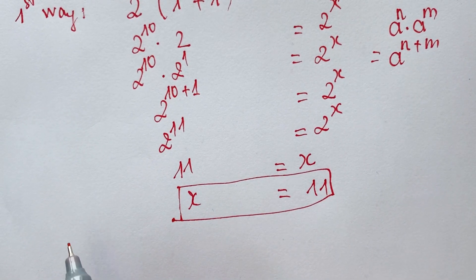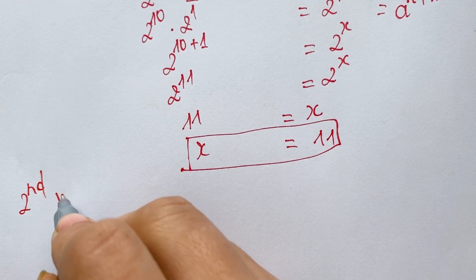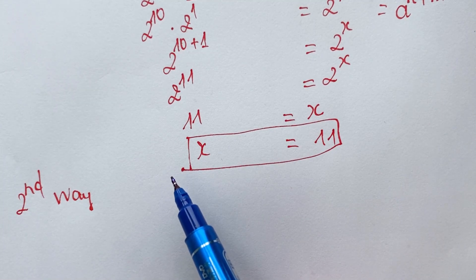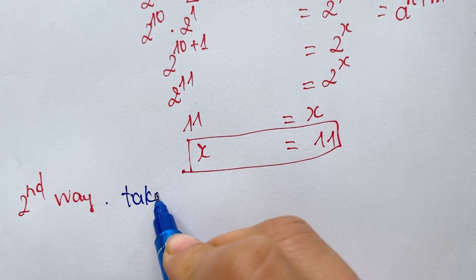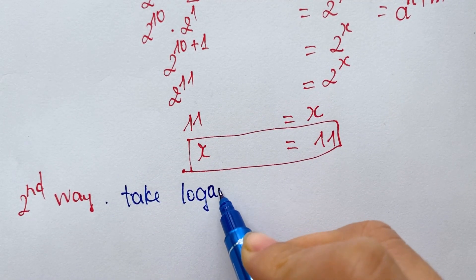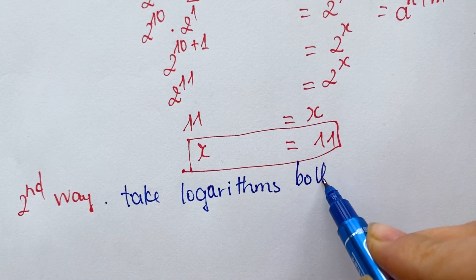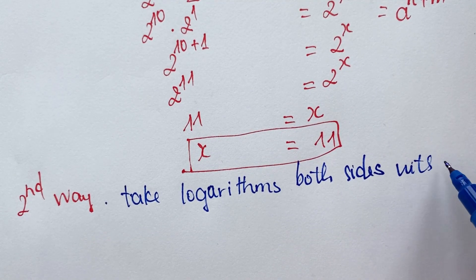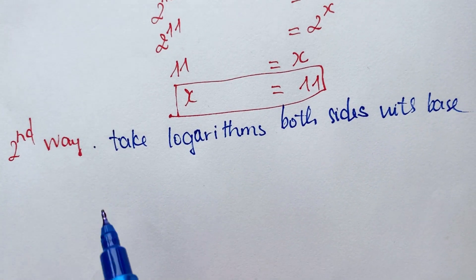Now we can move to the second way. For the second way, we need to take logarithms on both sides with base 2 — a log base 2 type logarithm on both sides.